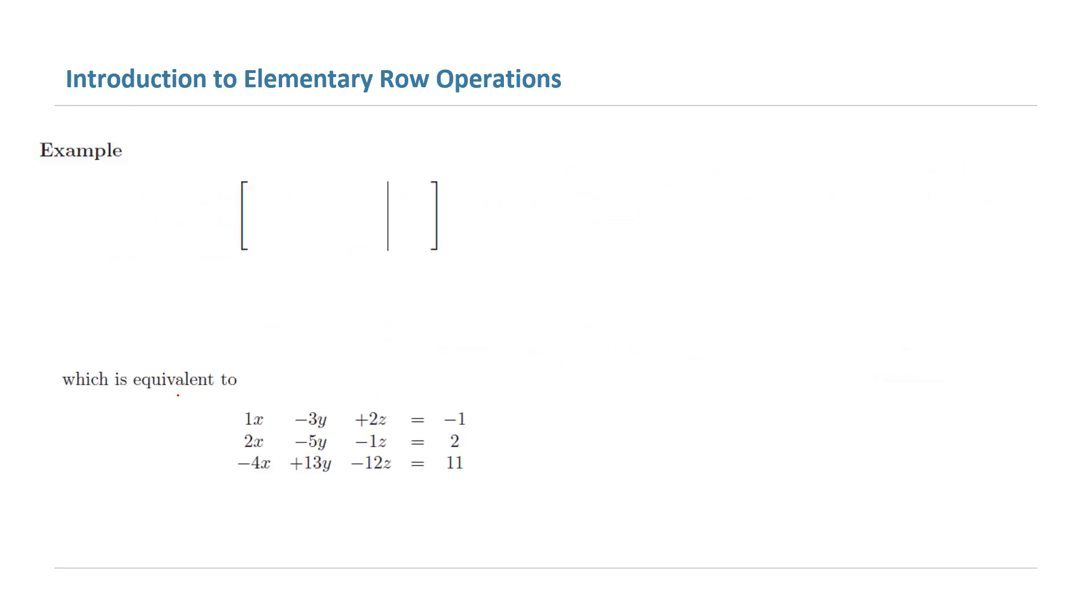For example, take a look at this system of linear equations. The coefficients are 1 times x minus 3 times y plus 2 times z equals negative 1.